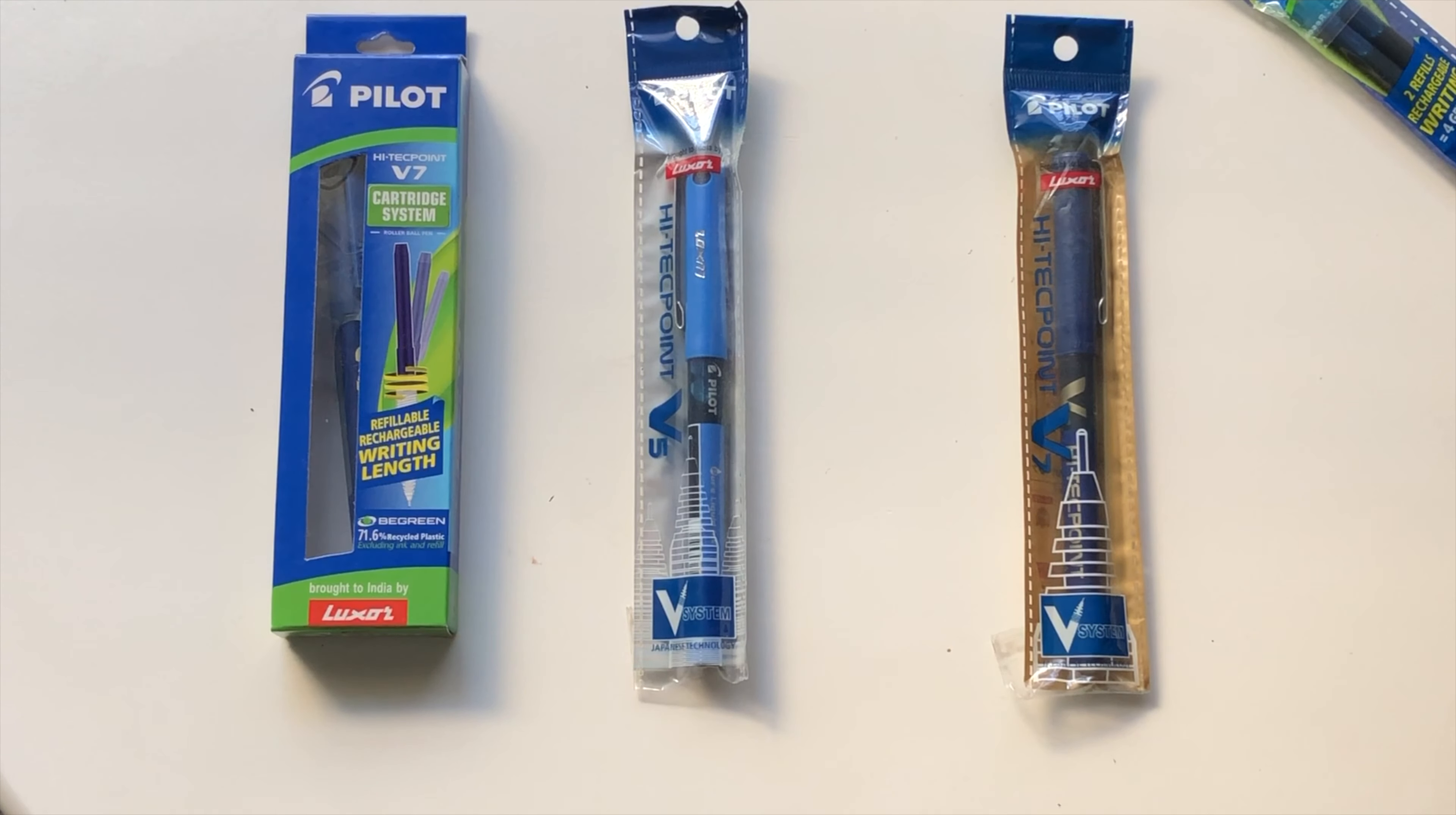Here we go. This is V5 High Tech Point 0.5 Pilot. This one has a metallic clip compared to the plastic clip on the V7. Now this is the ink reservoir. It's a non-refillable, use and throw kind of pen. Let's unscrew the cap. This is 0.5. This is a little more fine compared to 0.7. That's the feed, and you can't remove the barrel.